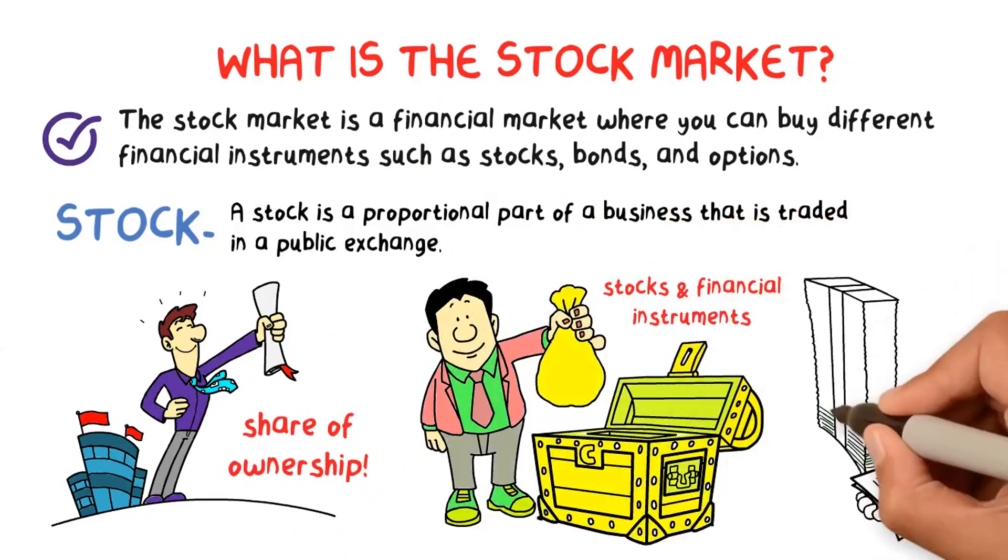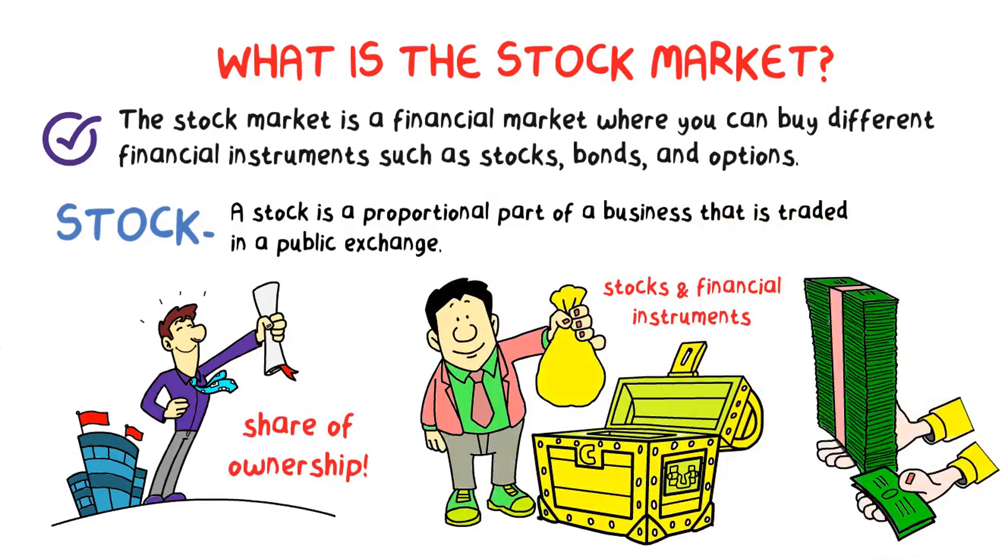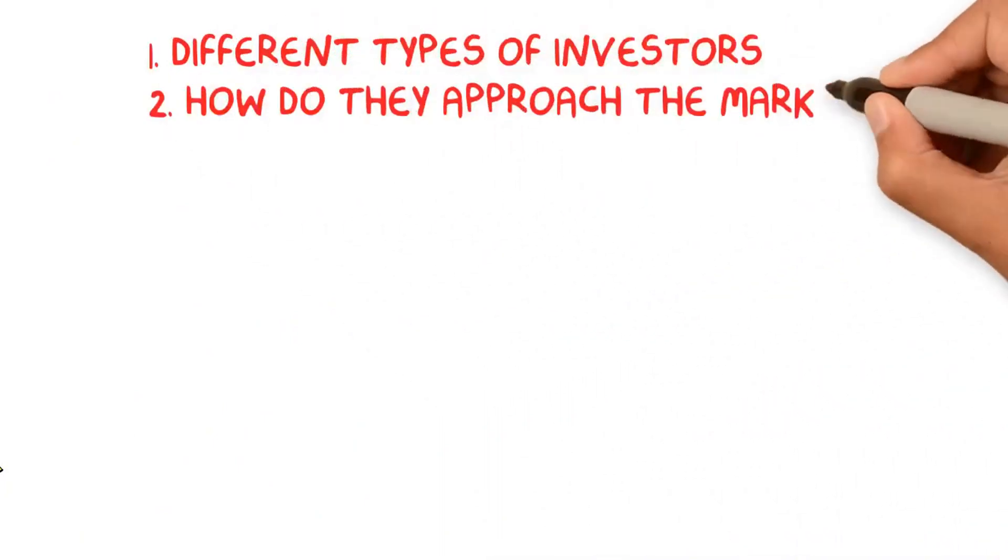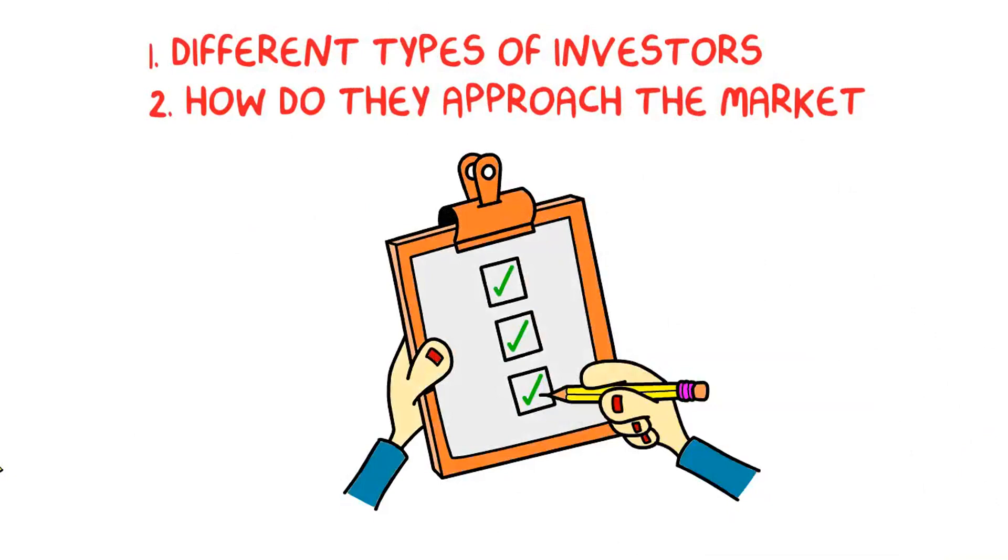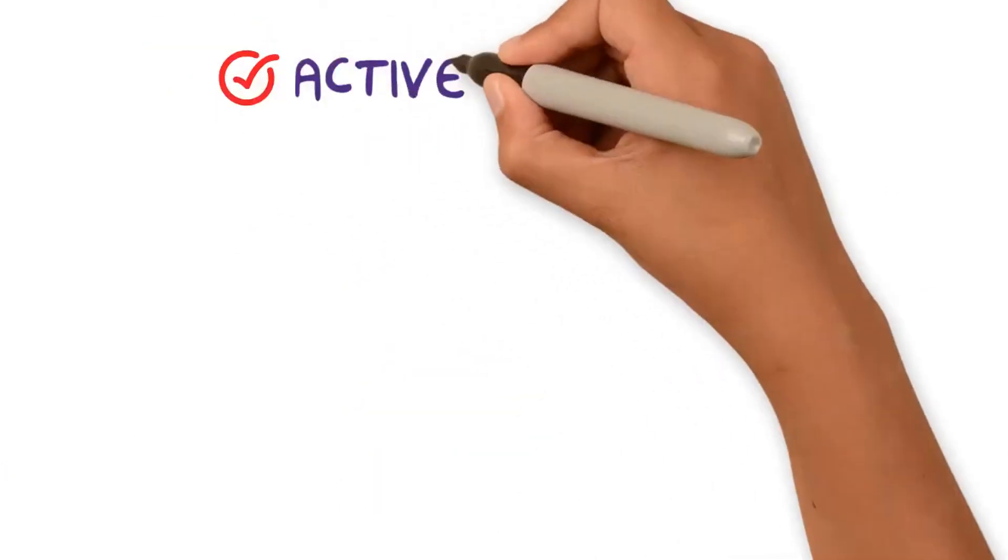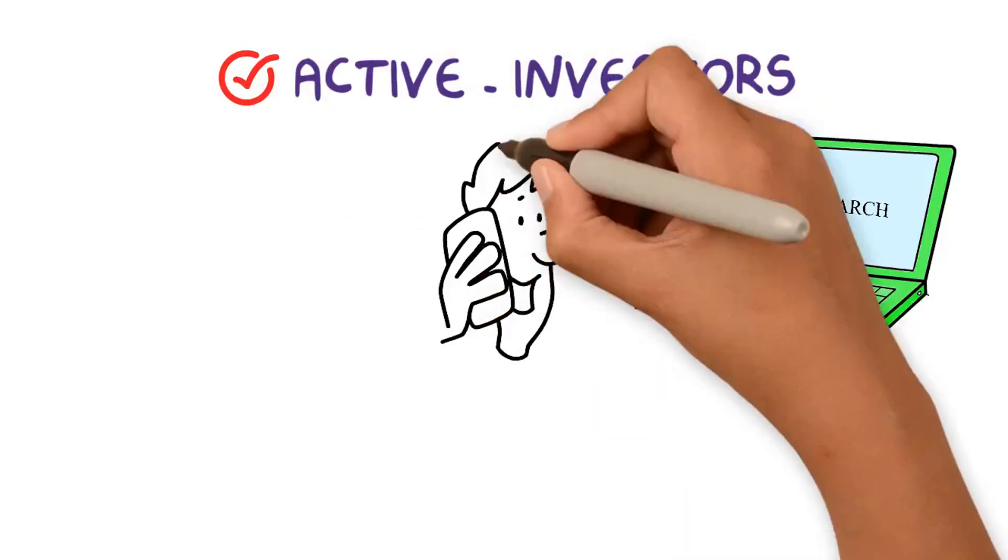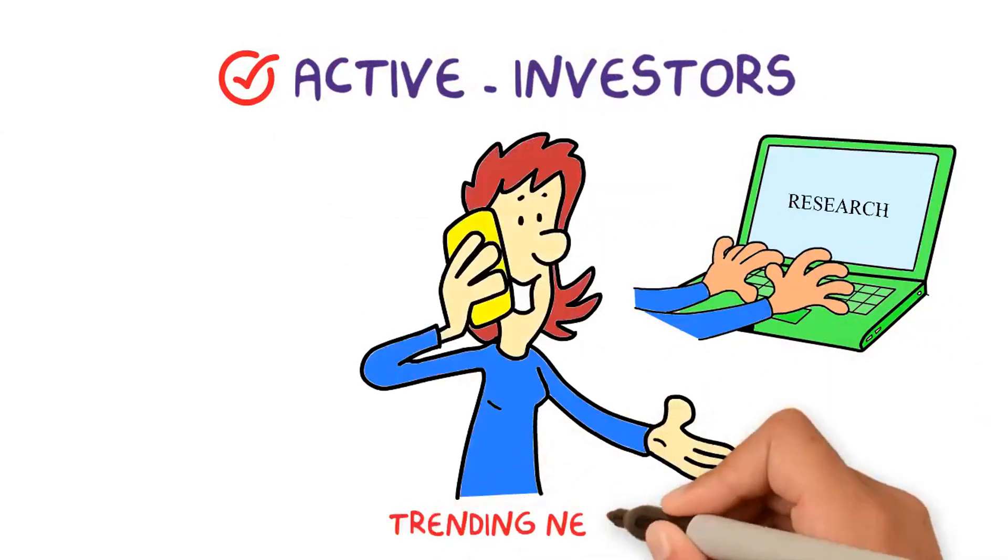Now let's talk about the different types of investors and how they approach the market. Basically, there are three main types of investors. The first one is called active investors. These investors do a lot of research and they are daily informed about the fundamental and trending news of the market.